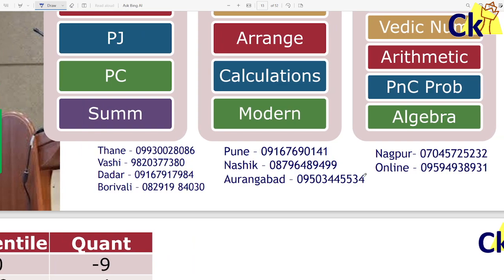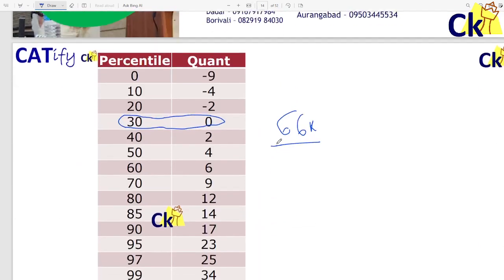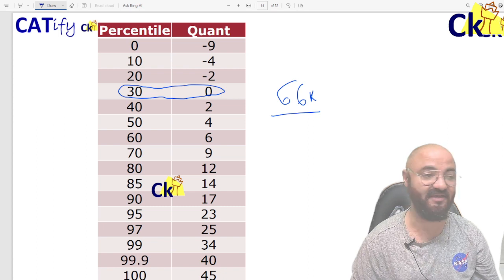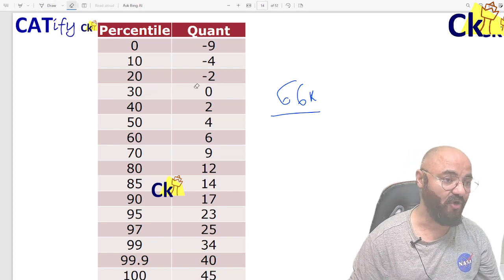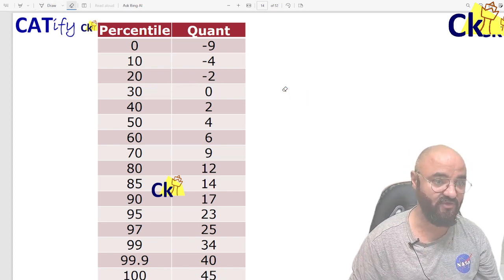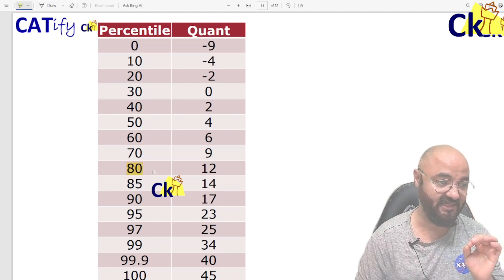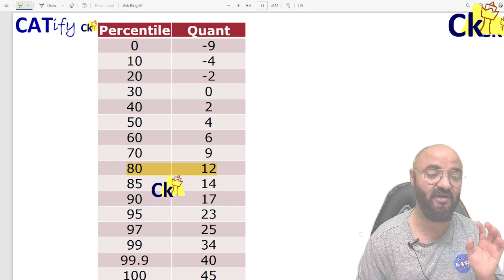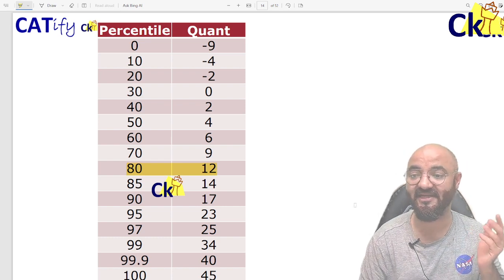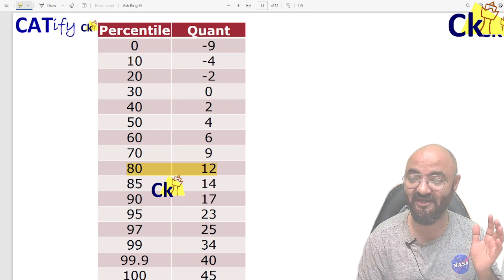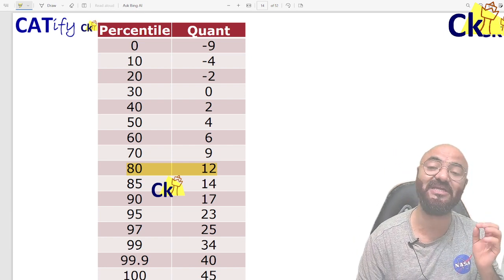Coming back to the score versus percentile, your target score is obviously not zero. For those who are weak in maths, your target is eighty percentile if you want IIM calls. And eighty percentile is surprisingly or shockingly, whichever way you want to say it, is only twelve marks.